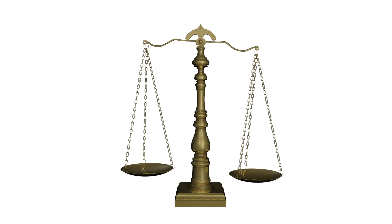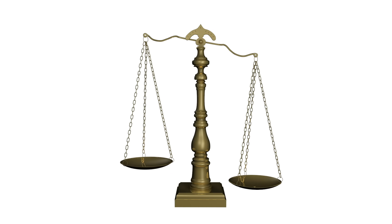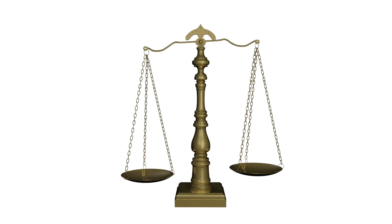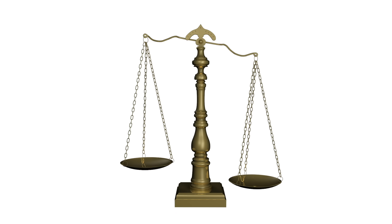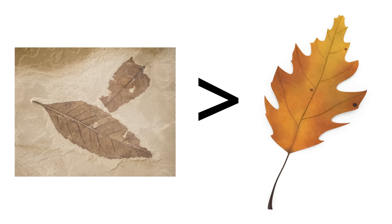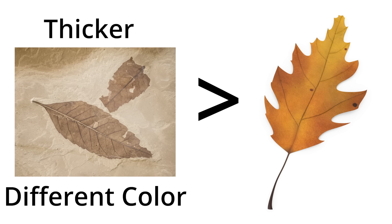When a fossil is formed, it becomes heavier than the original organism from which it came. For example, because it's now made from mineral and rock material, a fossil of a leaf will weigh much more than the original leaf itself. While it may have the same shape of the leaf, it can actually be much thicker or be a different color than the original leaf, because hardened minerals have taken the place of the organic material.